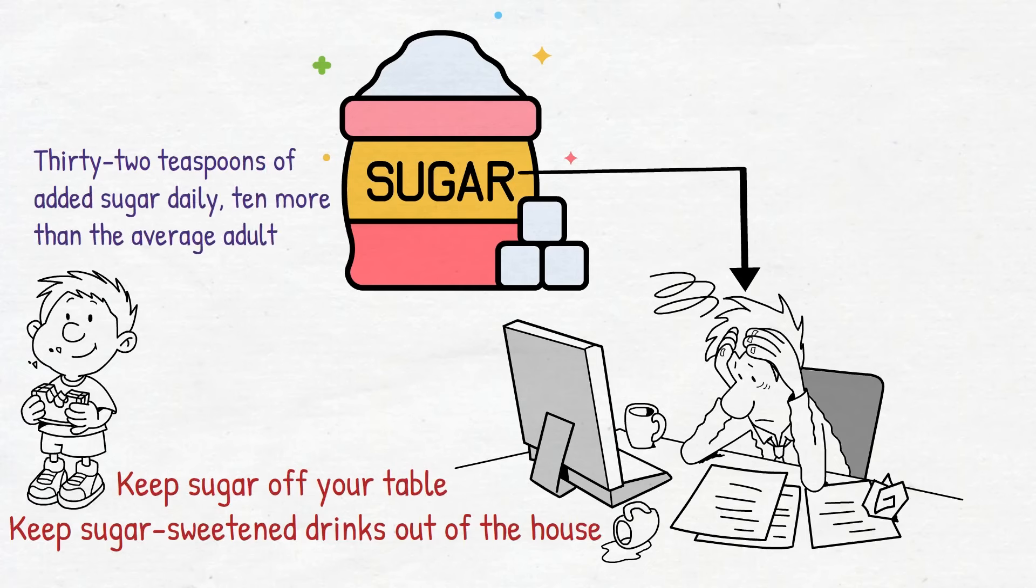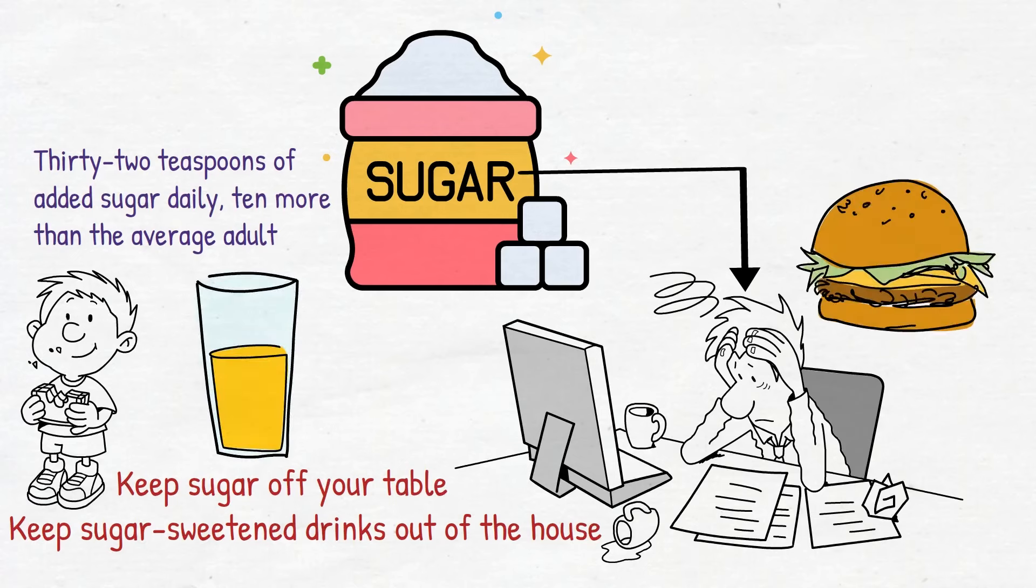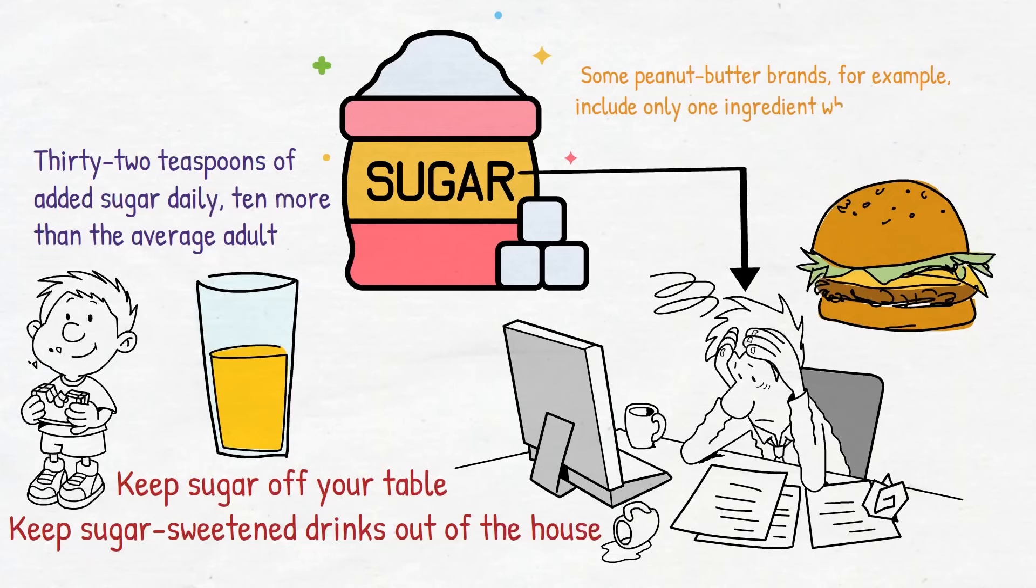If your kids like fruit juice, dilute it with water, and avoid eating processed foods if you can. But if you have to, read the labels first. Some peanut butter brands, for example, include only one ingredient, while other brands include sugar and salt, plus chemical preservatives.